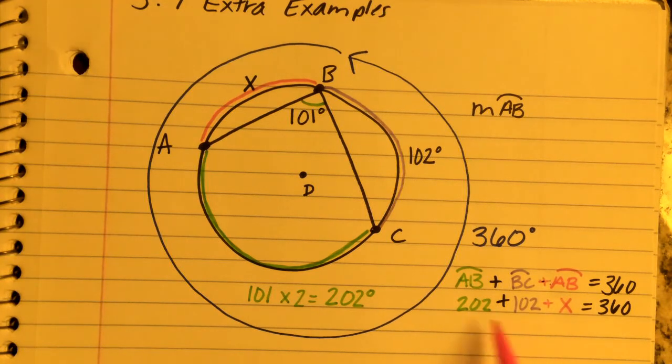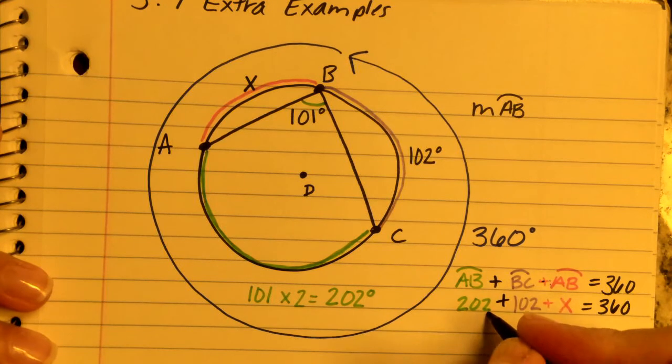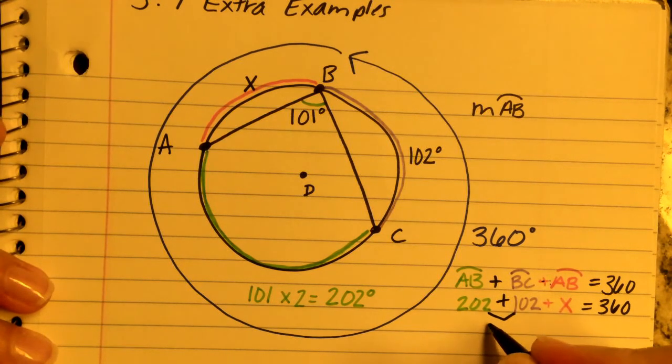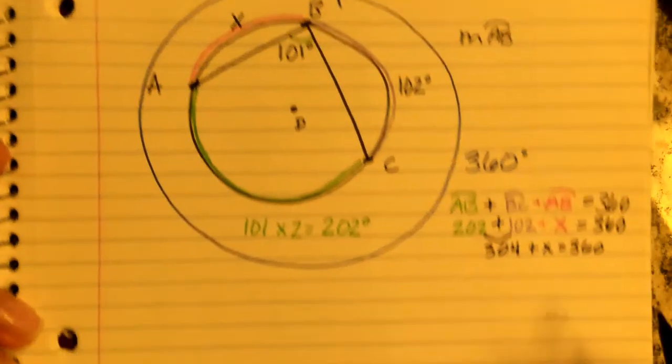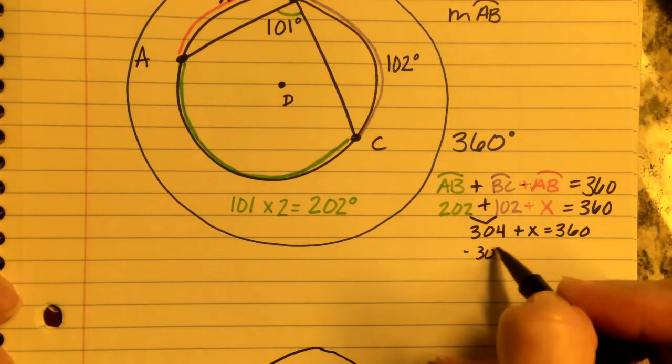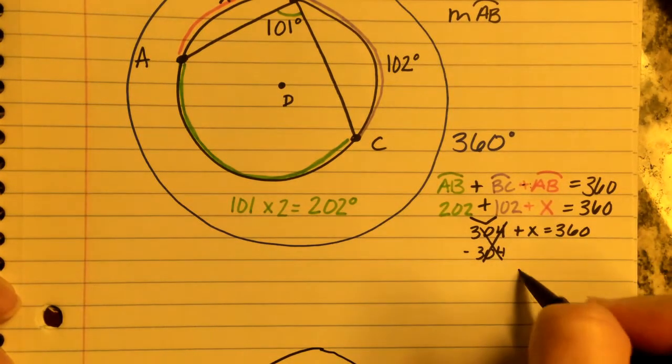We wind up with 304 plus X equals 360. Now we subtract 304 from both sides to get X by itself.